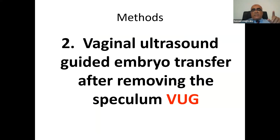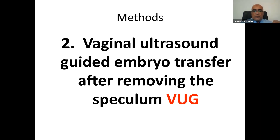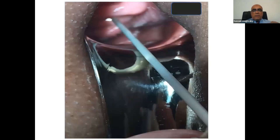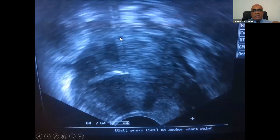The second technique is vaginal ultrasound guided embryo transfer after removing the speculum. You use exactly the same approach: place the speculum, place the catheter, remove the speculum, then introduce the vaginal ultrasound — or use a posterior vaginal speculum without the casco — introduce the catheter, and deposit the embryos at the desired location.